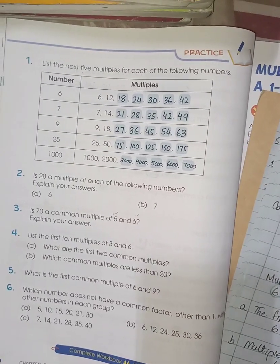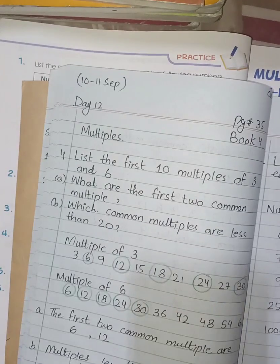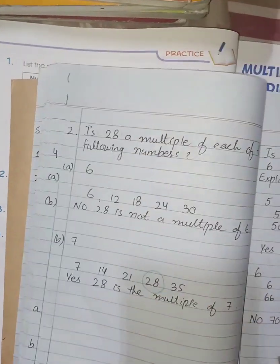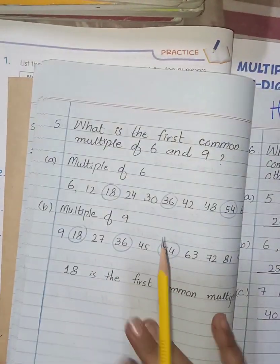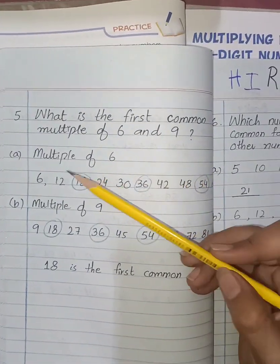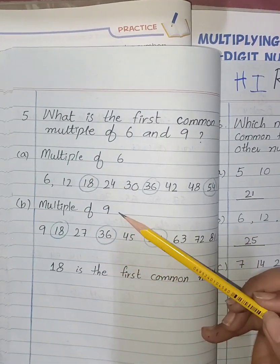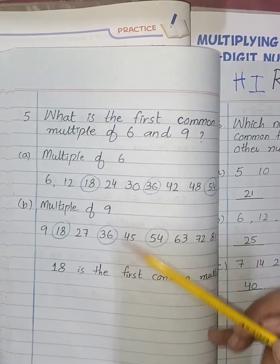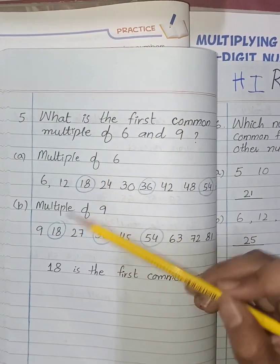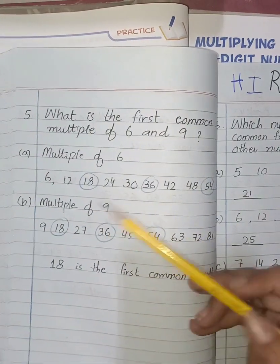Question number five: what is the first common multiple of 6 and 9? I have written the table of 6 and the table of 9. The first common multiple of 6 and 9 is 18.